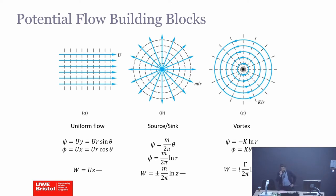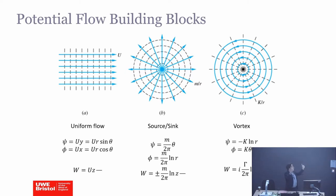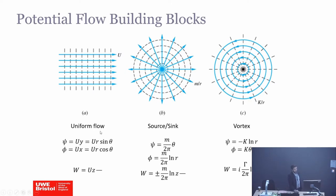Last time, we said that there are three main building blocks for potential flow — elementary flow models. The first one is the uniform flow. The second is a source or sink. A source is an infinitely thin, infinitely short pipe giving fluid away radially outwards, and the sink is the other way, sucking fluid into a point. We also spoke about vortex flow, where the streamlines are circular lines going around the center of the vortex. We wrote down the equations for the stream function psi, the velocity potential phi, and you can easily work out the velocity components from those.